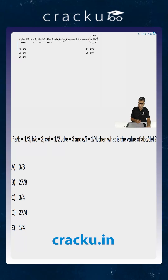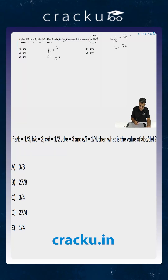If A by B is equal to 1 by 3, then the value of B is equal to 3A. Similarly, the value of B by C is equal to 2, so the value of C is equal to B by 2, or the value of C is equal to 3A by 2.